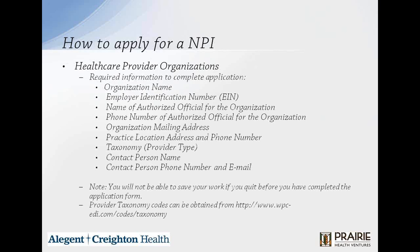Before you get started for healthcare provider organizations, make sure you have your organization name, your employer identification number, the name and phone number of your authorized official for the organization, the mailing address, the practice location address and phone number, the taxonomy (provider type), and the contact person phone number and email. You will not be able to save your work if you quit before completing the application form, so when you start it, you need to make sure you finish. Provider taxonomy codes can be obtained from the website listed.